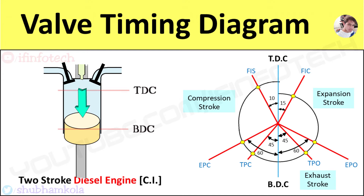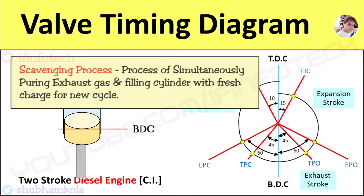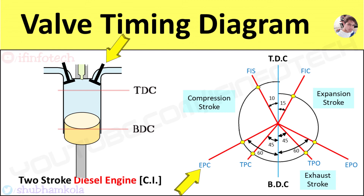Near the end of the expansion stroke, the exhaust port opens at an angle of 60 degrees before BDC position of piston. This allows exhaust of combustion residual gases. The transfer port opens at an angle of 45 degrees before BDC position of piston for the scavenging process, and closes at an angle of 45 degrees after BDC position of piston. The exhaust valve closes at an angle of 60 degrees after BDC position of piston.